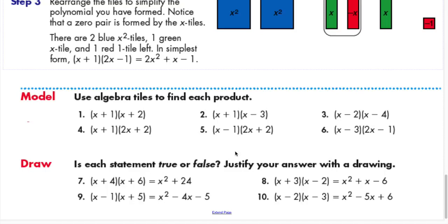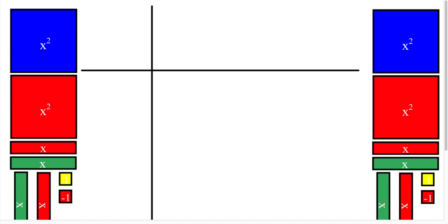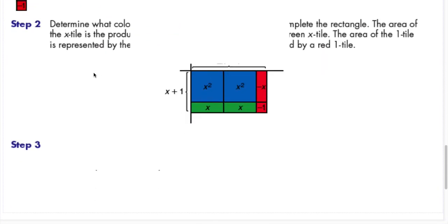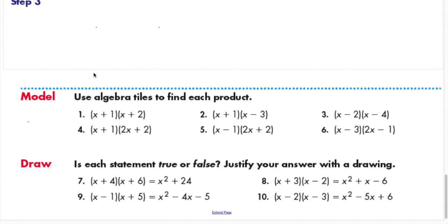You can try some of these examples on your own using algebra tiles. Now let's go to the lesson proper, 9-7. Let's look at some examples using the algebra mat. Let's pick example 5: x minus 1 times 2x plus 2.